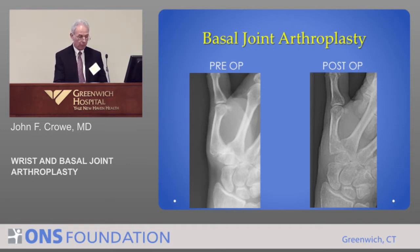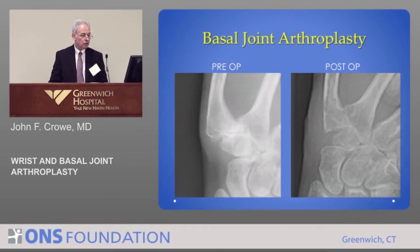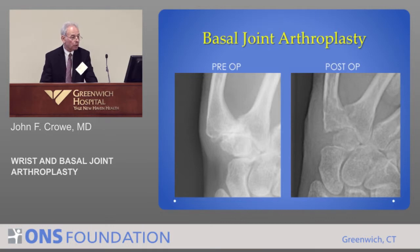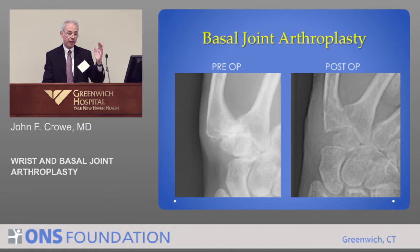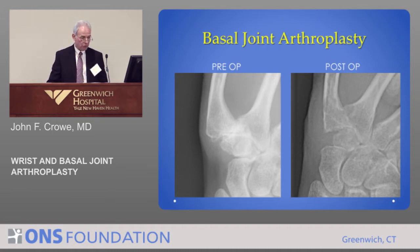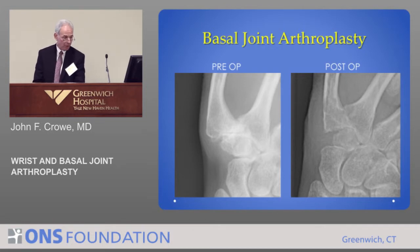If one just removes the trapezium, you can have good pain relief, but there's a tendency for the thumb to shift a little. That may not make a difference in a lot of low-demand patients, but it may in a younger patient. The trapezium bone is removed completely, aligned with the scaphoid, and we use one of the tendons to reconstruct the ligament so it stays aligned.